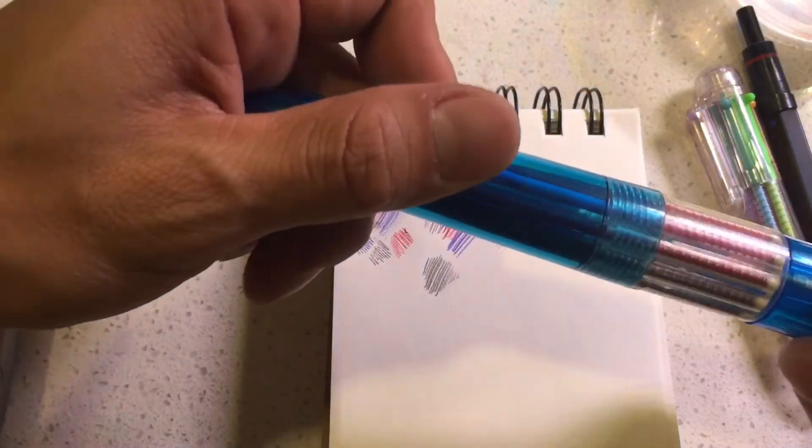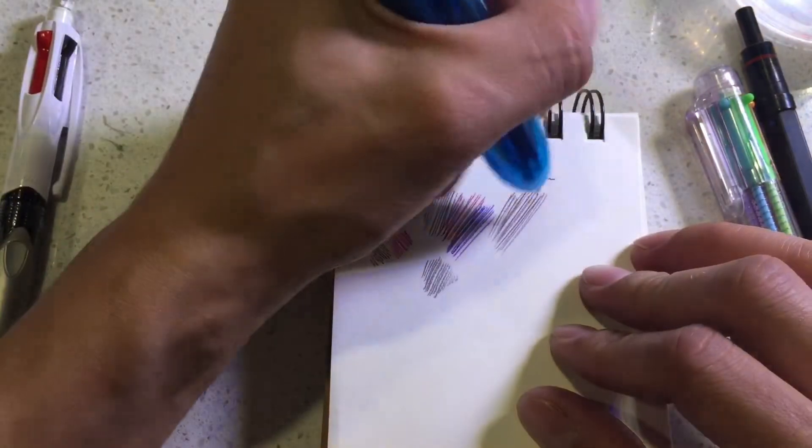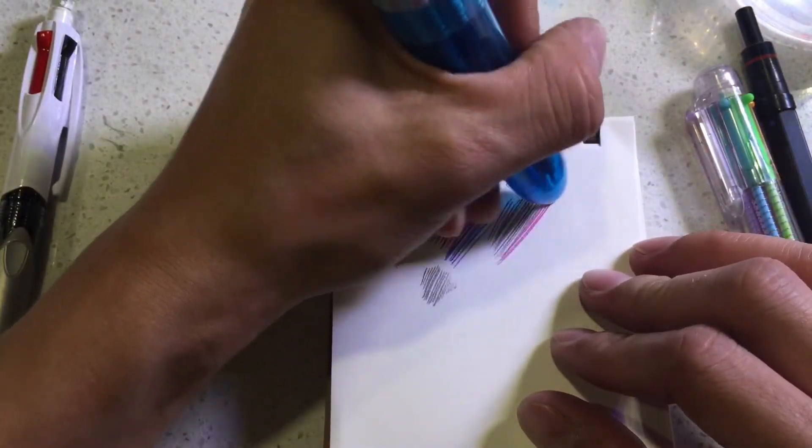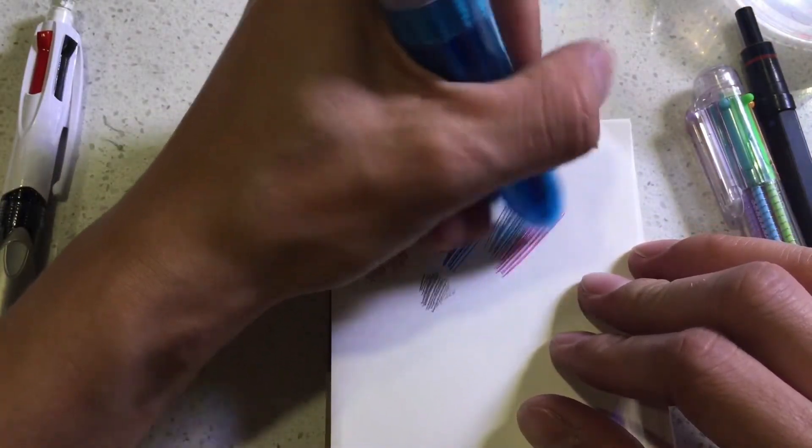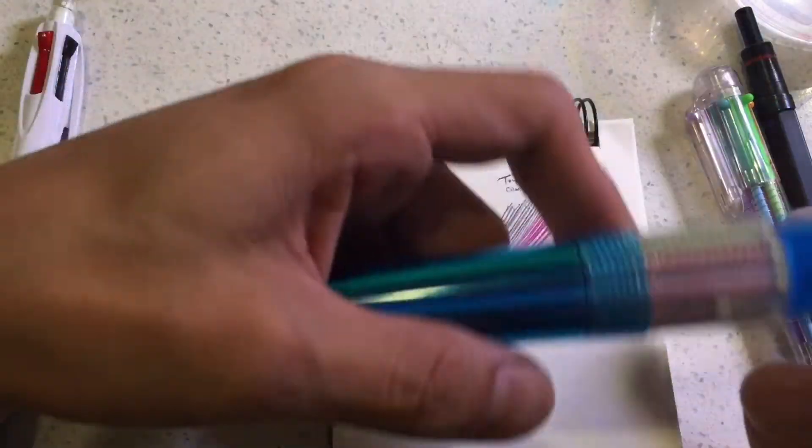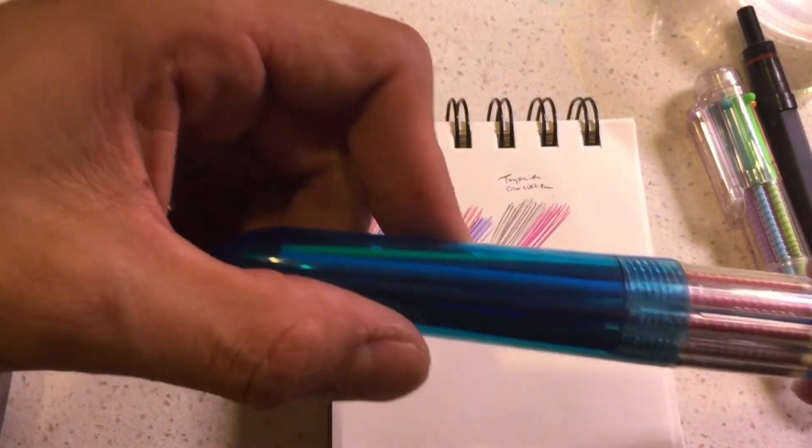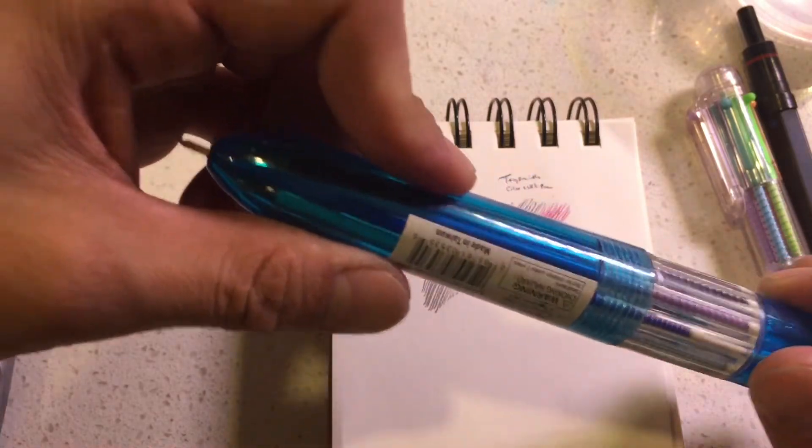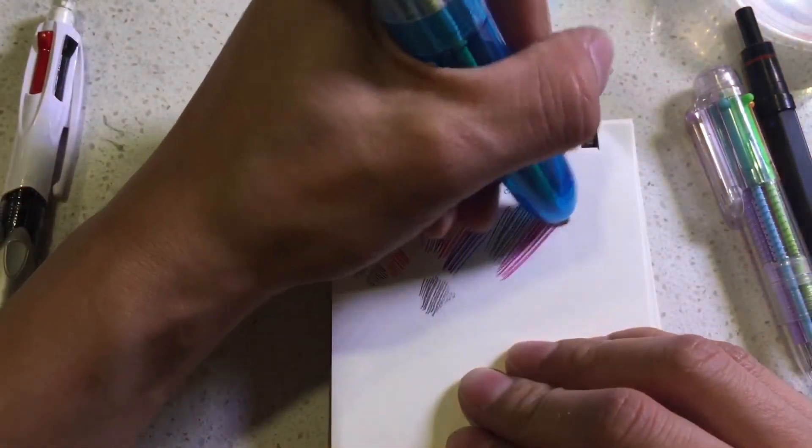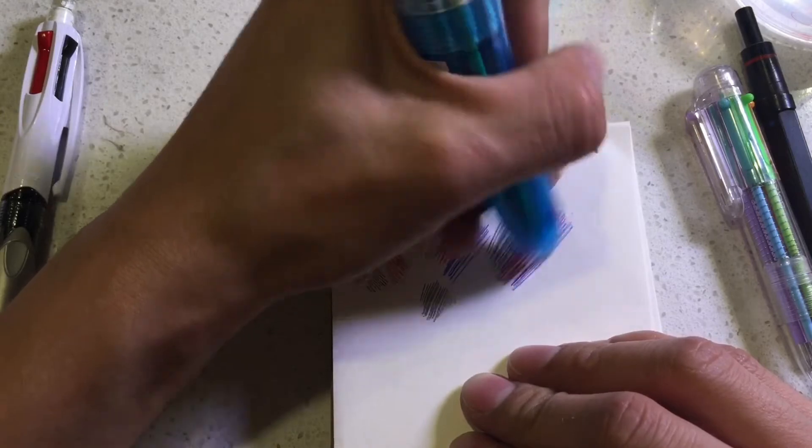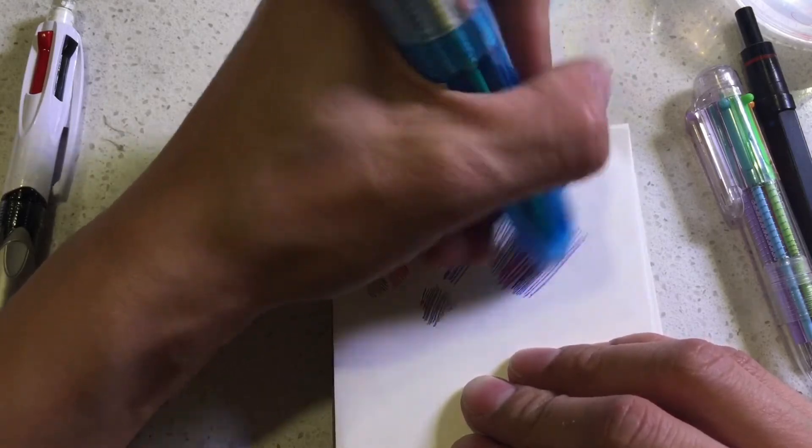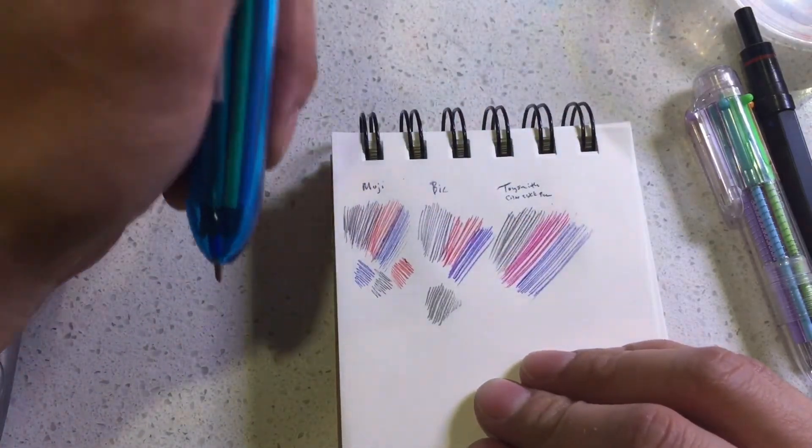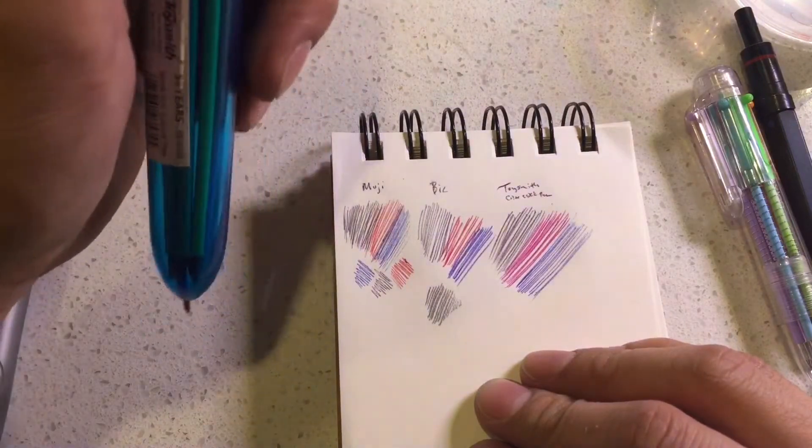Whoops. Talk about lightfastness - that one was the red. Okay and we'll do the blue. The blue looks very similar to the BIC color but that red is straight on magenta.